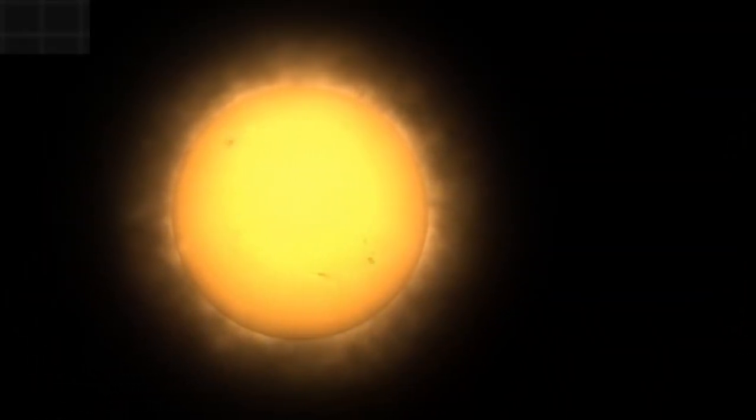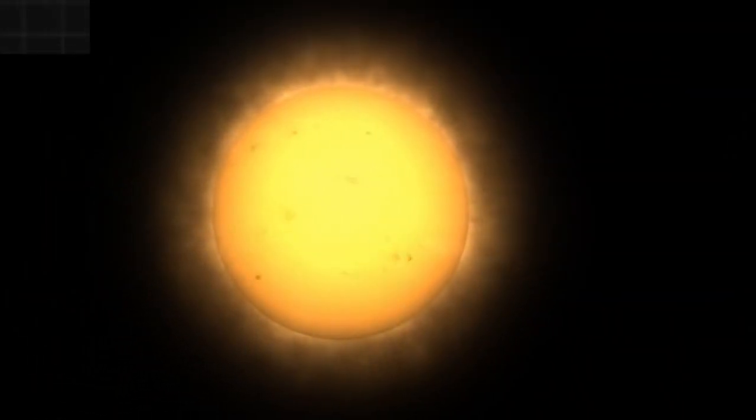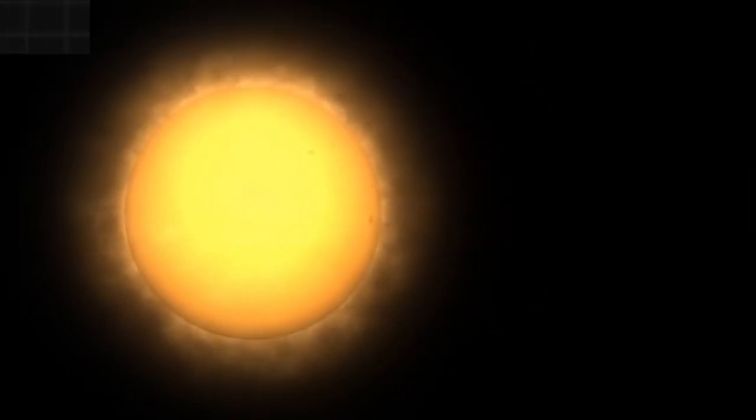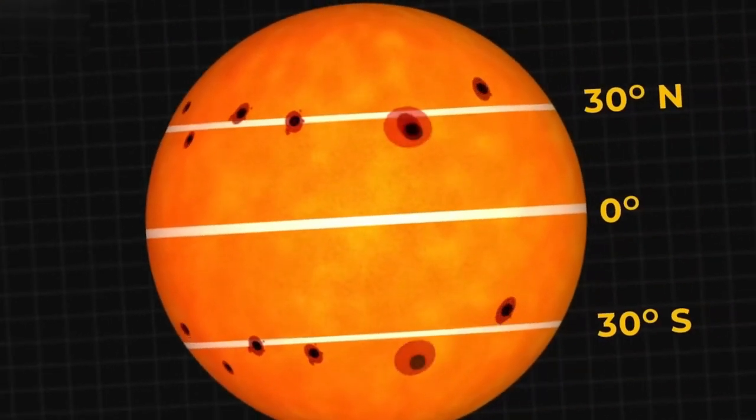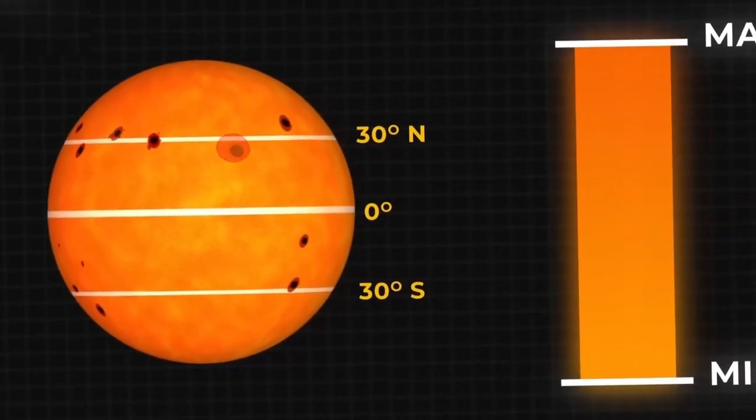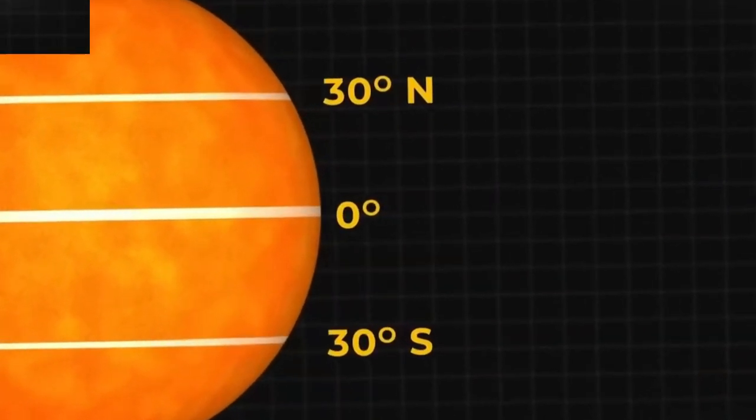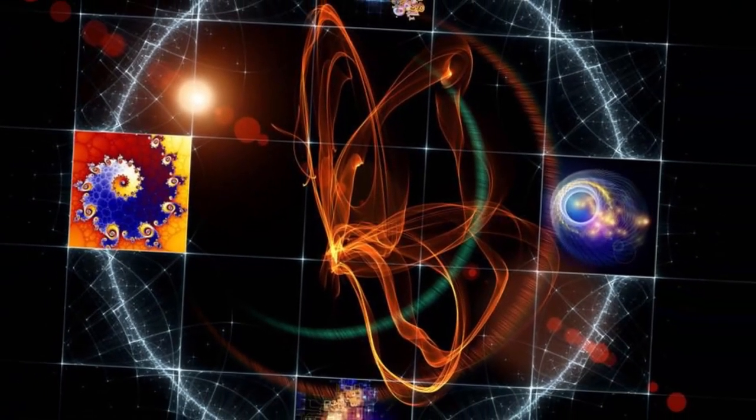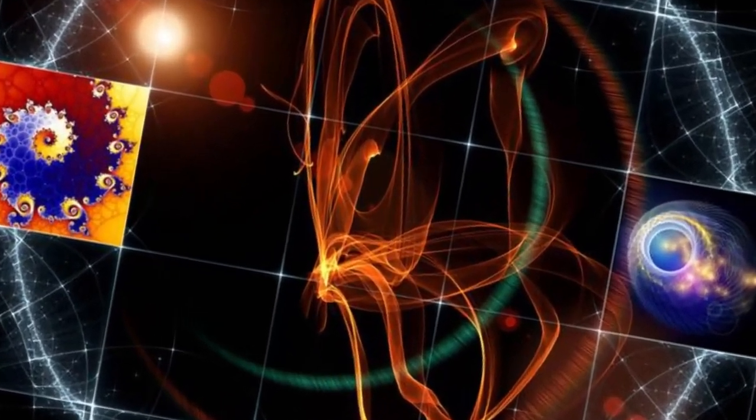Sunspots, temporary dark spots on the sun's surface caused by intense magnetic activity, are key indicators of this cycle. As the cycle progresses, sunspots emerge, peak, and then decline in number. This cyclical pattern is also reflected in a movement of sunspots across the sun's surface, creating what astronomers refer to as the butterfly diagram.